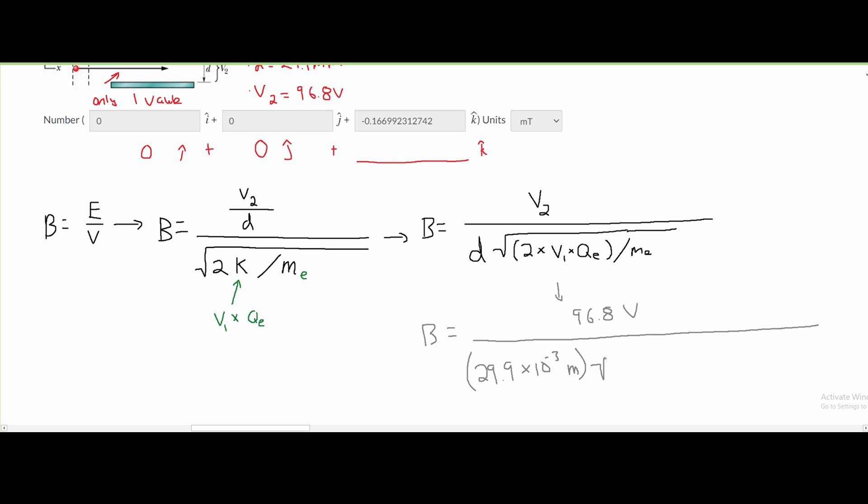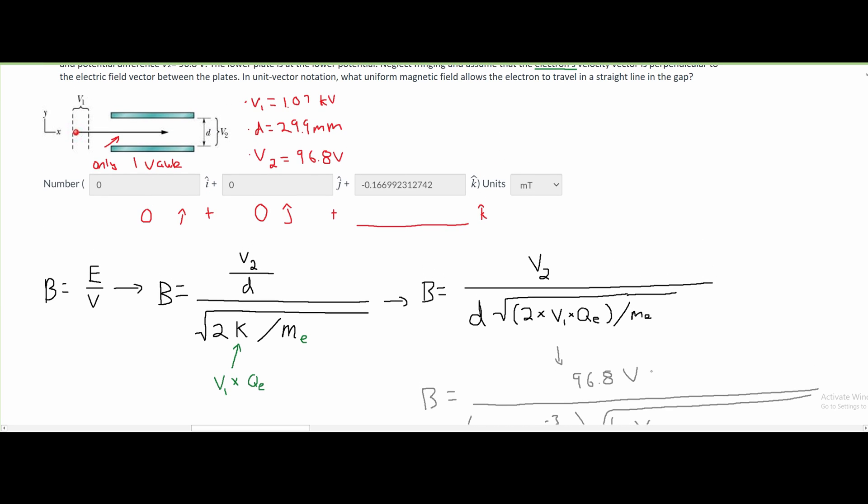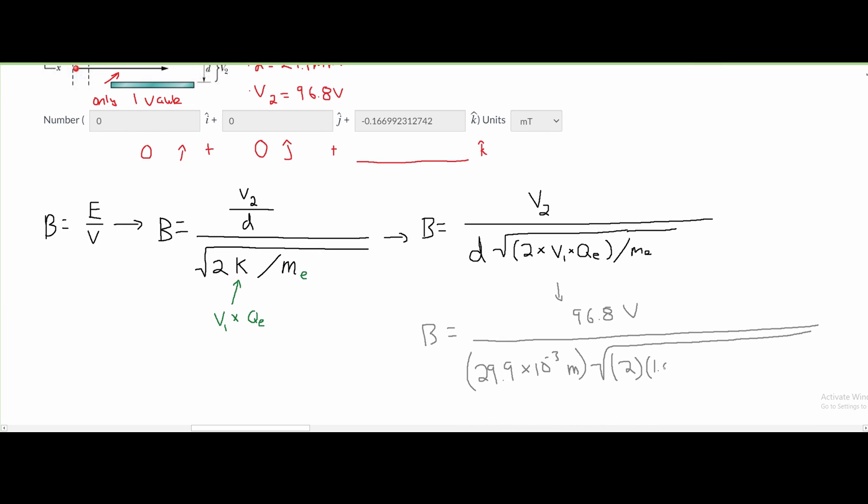And then we have our square root. Inside of our square root, we have 2, and this is times our V1, which is 1.07.